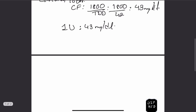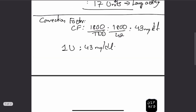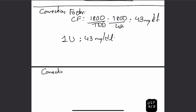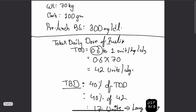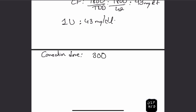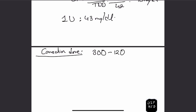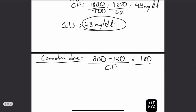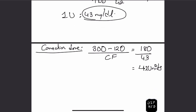After calculating the correction factor, we calculate the correction dose. Since this patient's blood sugar is 300 mg/dL, the formula is: (patient's blood sugar − target blood sugar) ÷ correction factor. That is (300 − 120) ÷ 43 = 180 ÷ 43, which comes out to approximately 4.2 units. So our correction dose is 4.2 units of insulin.